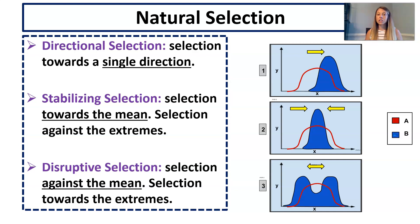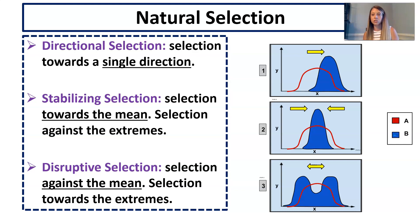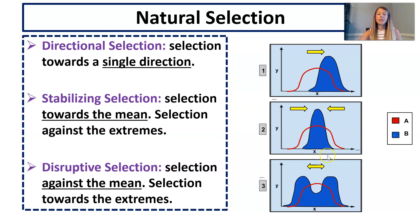In directional selection, natural selection is taking place towards a single direction — there's a shift in one direction as a result of natural selection. In stabilizing selection, there's selection towards the middle and against the extremes, so you have an increase in the population in the middle.